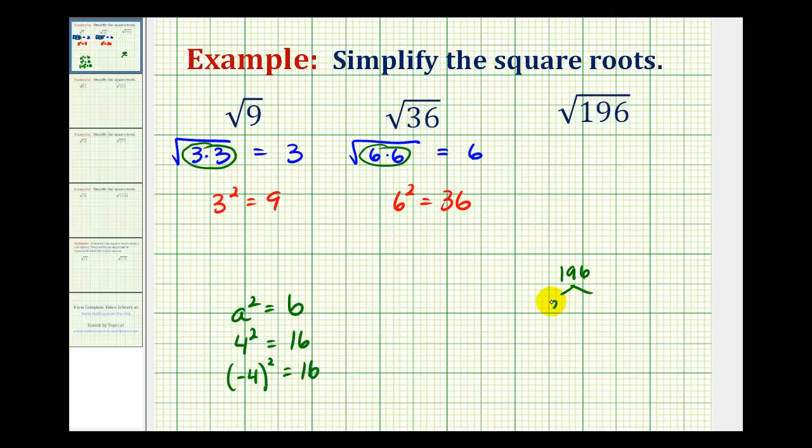Well, it's even, so that would be 2 times 98, and 2 is prime. 98 is even, that would be 2 times 49, and 2 is prime. And 49 is equal to 7 times 7, which are both prime. So that tells us that 196 is equal to 2 times 2 times 7 times 7.